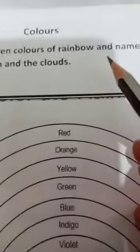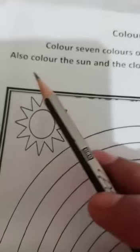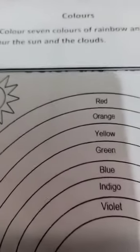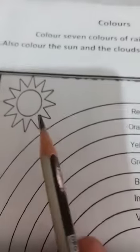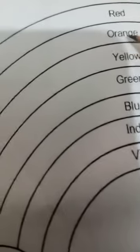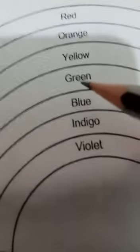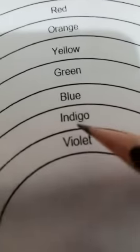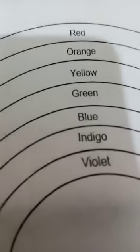Now, next worksheet: color the seven colors of the rainbow and name them. Also color the sun and the clouds. There are seven colors in the rainbow. First: red. Second: orange. Third: yellow. Fourth: green. Fifth: blue. Sixth: indigo. Seventh: violet. You have to do these colors.